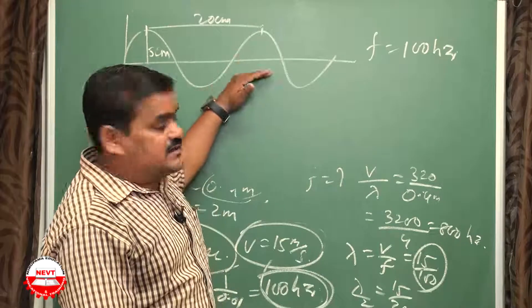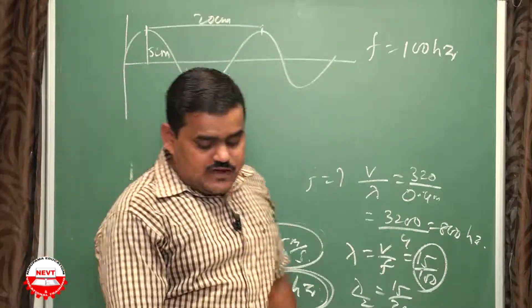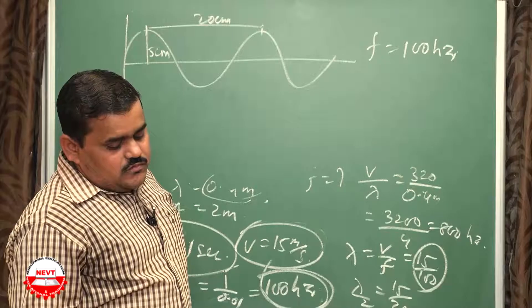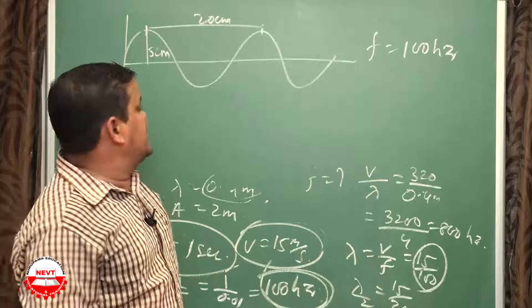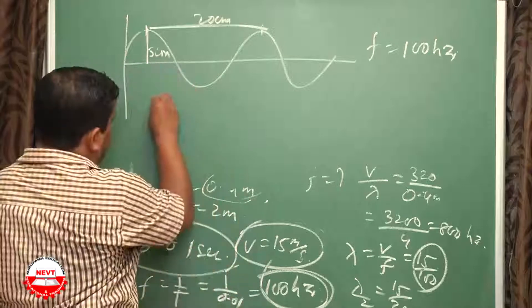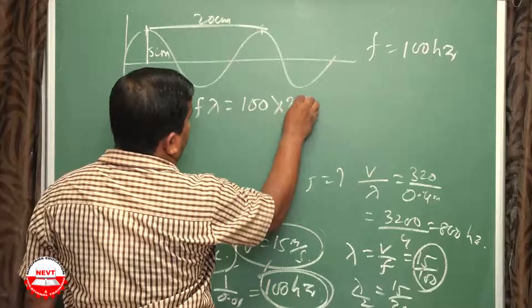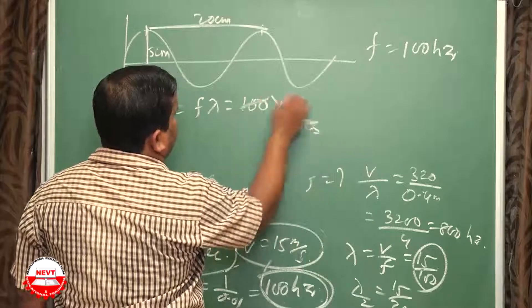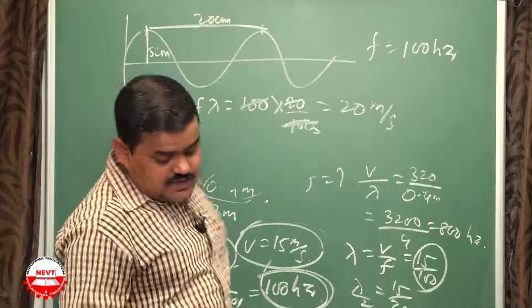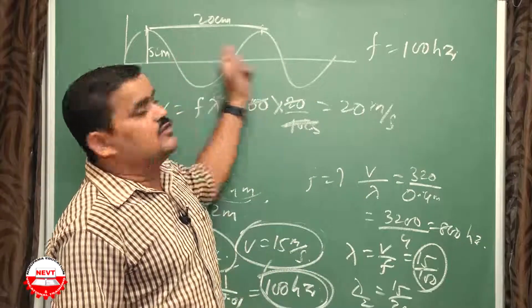Next important question — same diagram, different data. Wave frequency is 100 Hz, produced in a string. From the figure: amplitude = 5 cm, wavelength = 20 cm. Velocity V = fλ = 100 × (20/100) = 20 m/s. Nature of the wave: since the wave is produced in a string, it is a transverse wave — particles vibrate perpendicular to the direction of wave propagation.